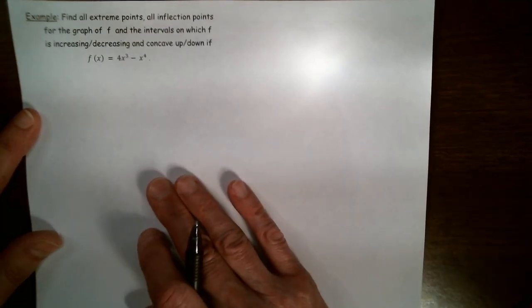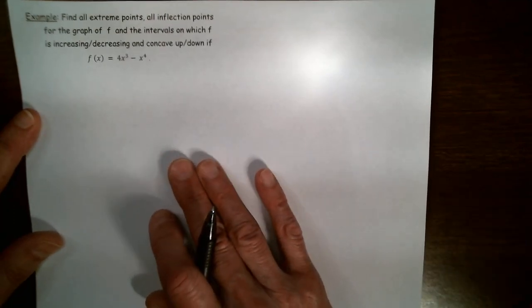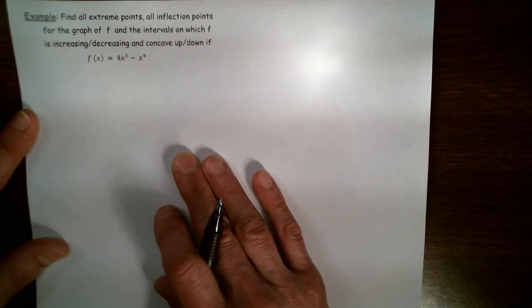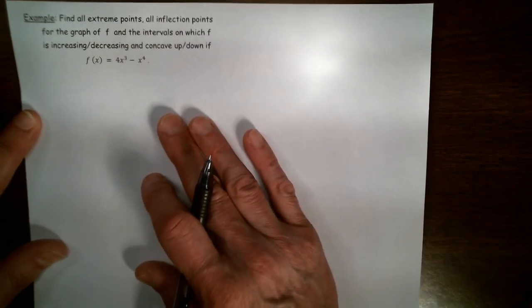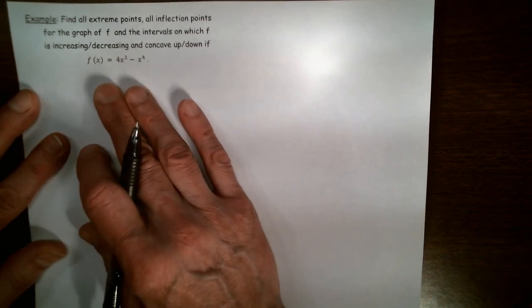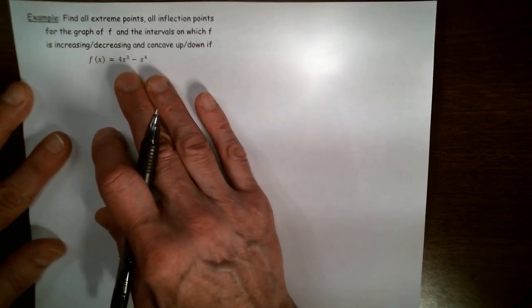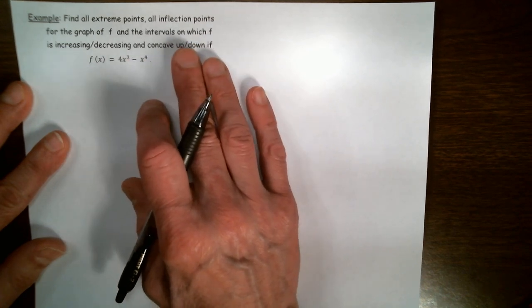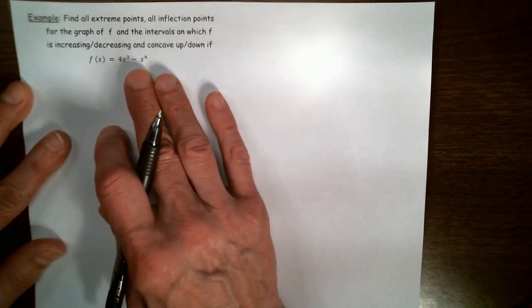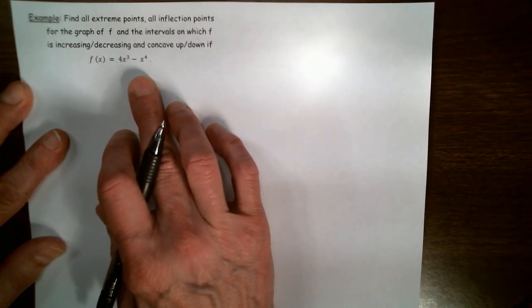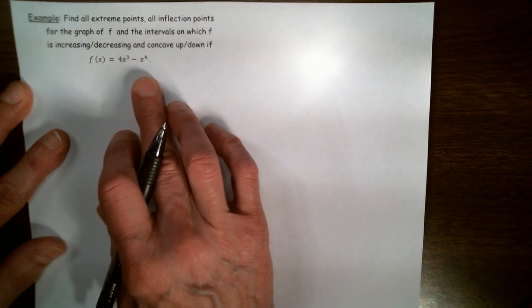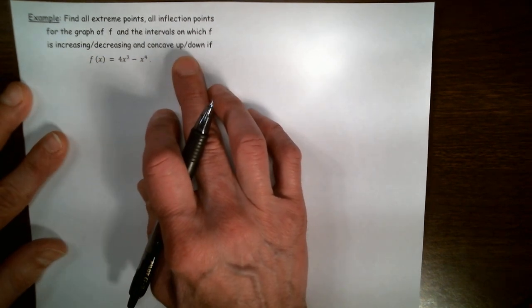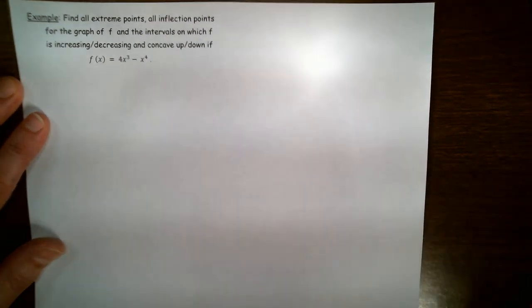We're now ready to apply analysis of the first and second derivative of a function to sketch its graph accurately. Consider the problem of finding all the extreme points, inflection points, and the intervals on which the function f(x) = 4x³ - x⁴ is increasing or decreasing and concave up or concave down.